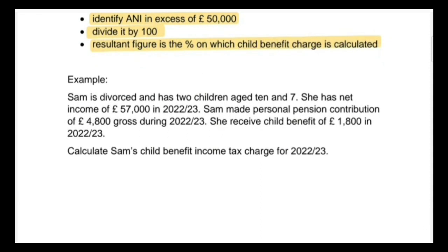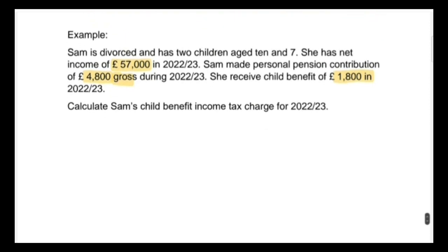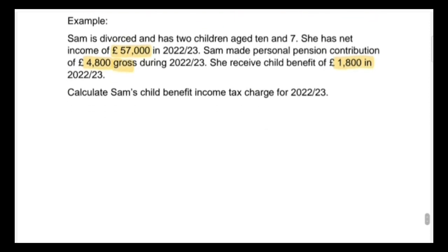Example: Sam is divorced and has two children aged 10 and 7. He has net income of £57,000 in 2022-23. Sam made personal pension contributions of £4,800 gross during 2022-23 and received child benefit of £1,800 in 2022-23. Calculate Sam's child benefit income tax charge for 2022-23. First, we have to calculate the adjusted net income to determine whether it is in excess of £50,000 or not.